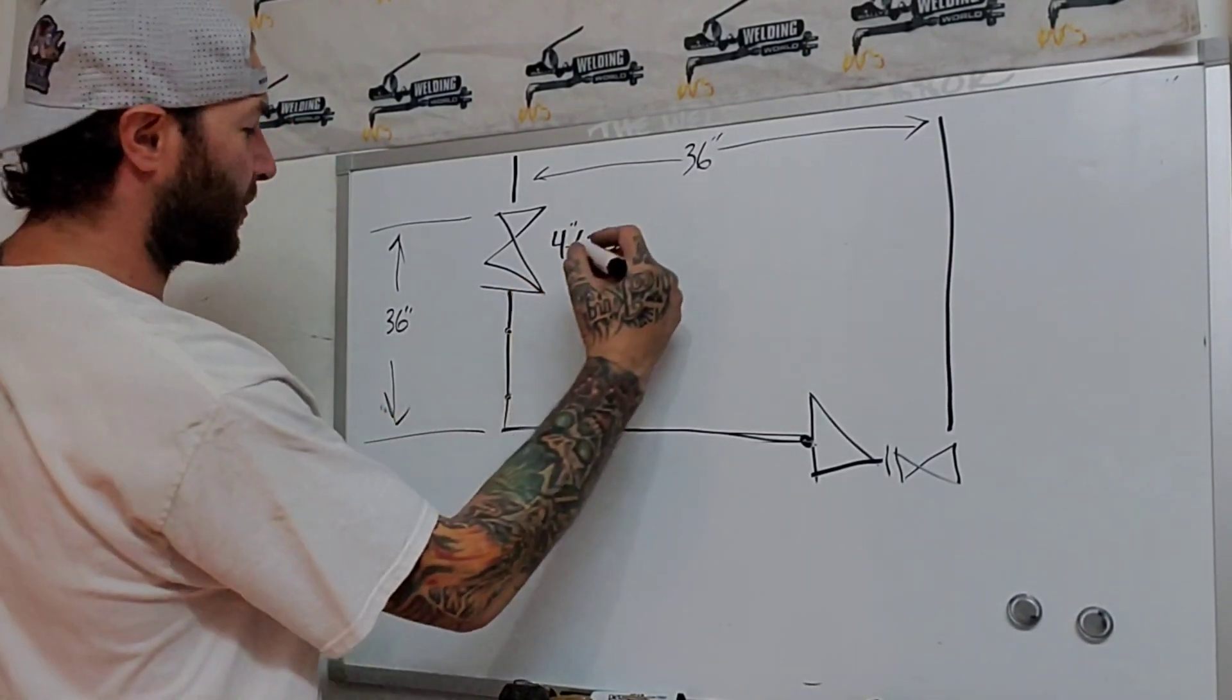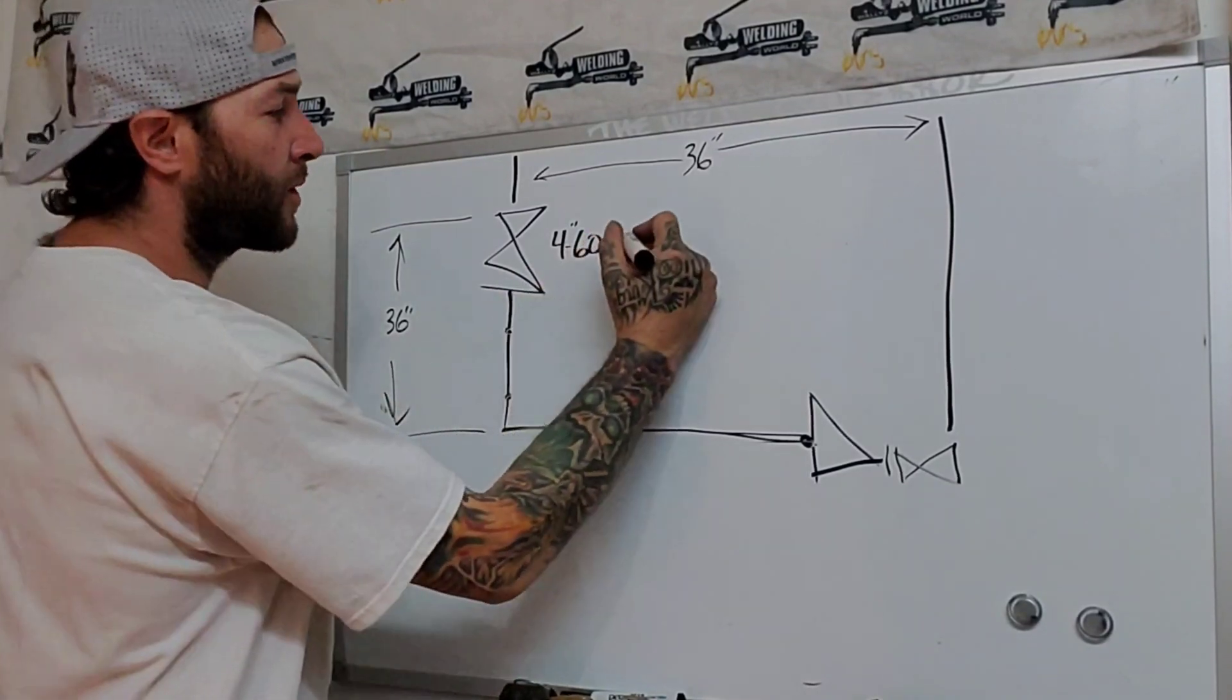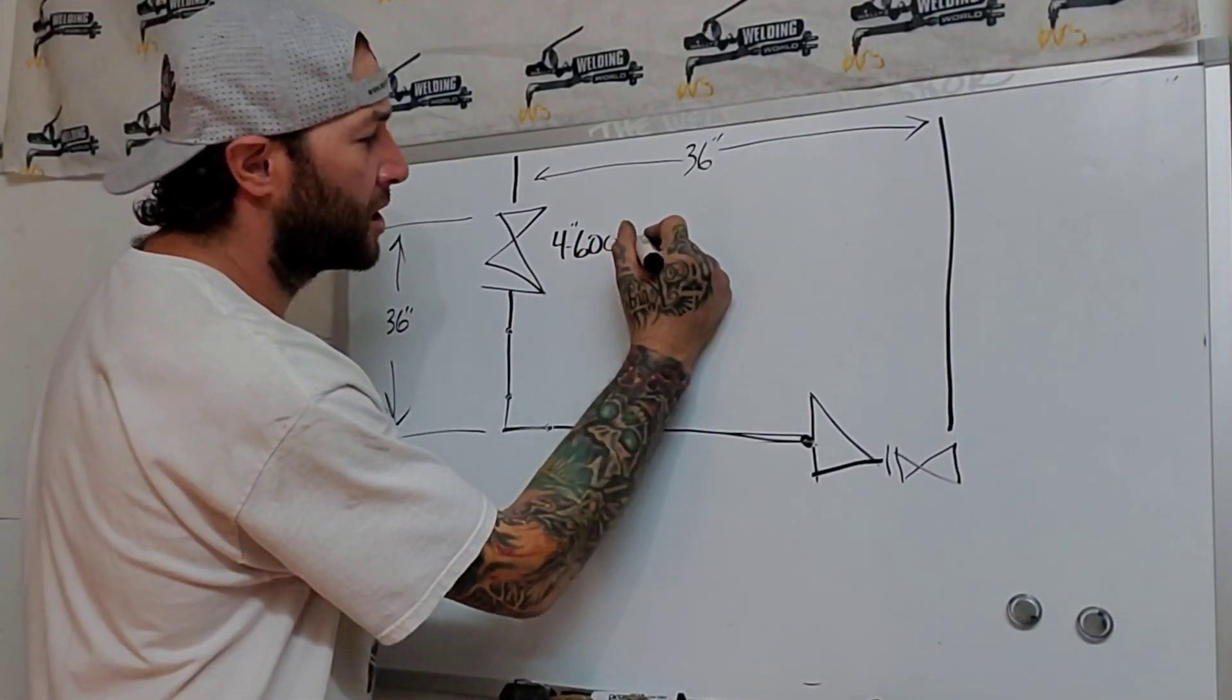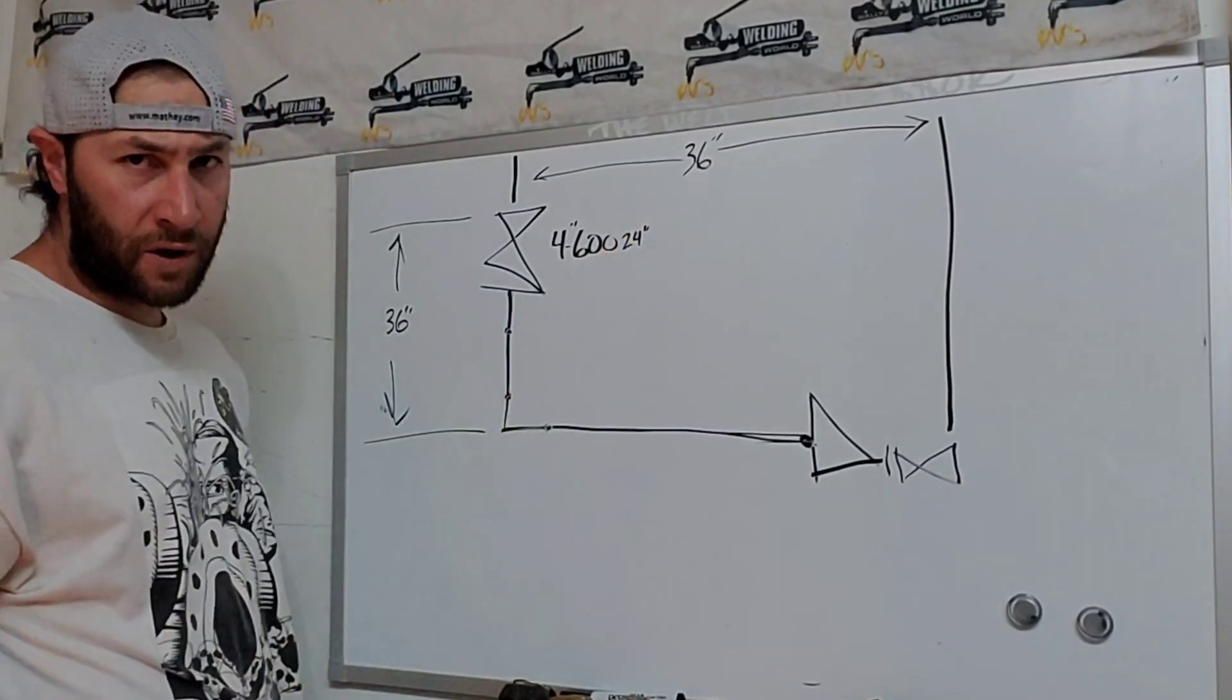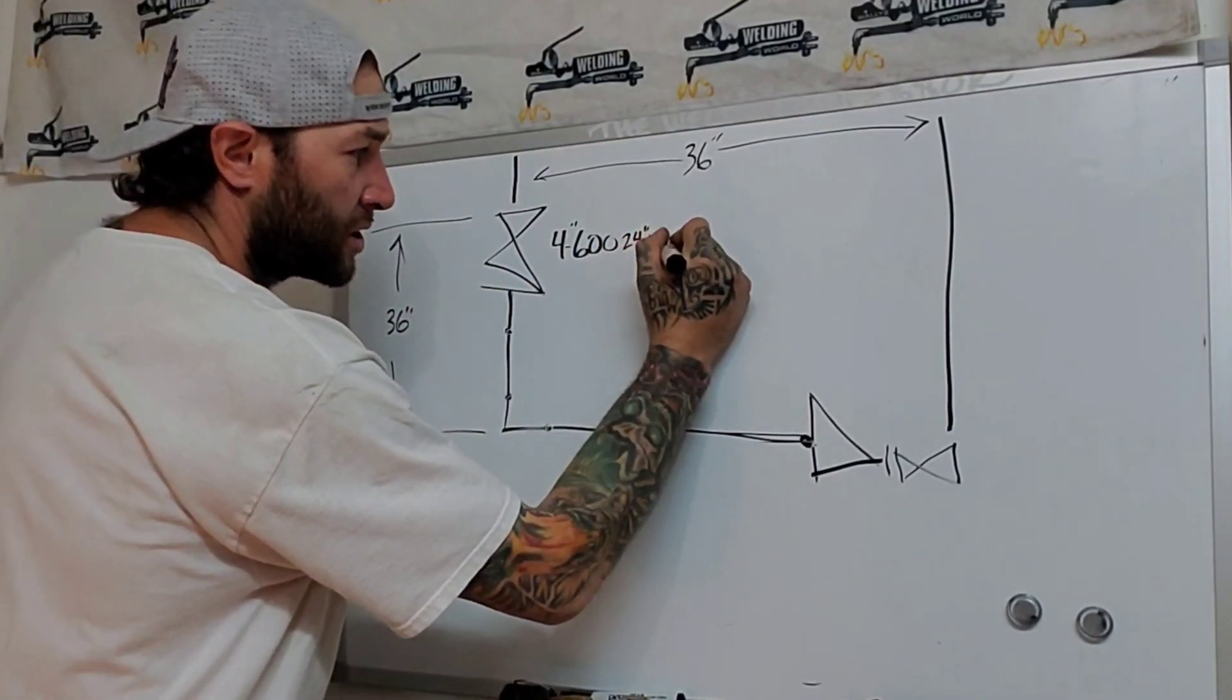So let's just call this valve a 4-inch, 600-pound valve. And I'm not sure exactly what the math is for that, but let's just give it an easy number right off the bat, and let's call it a 24-inch valve. Say this valve right here is 24 inches.